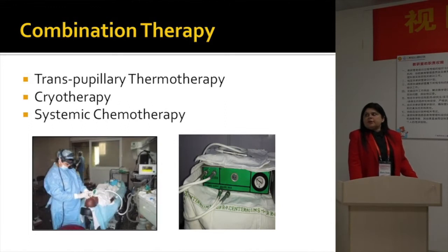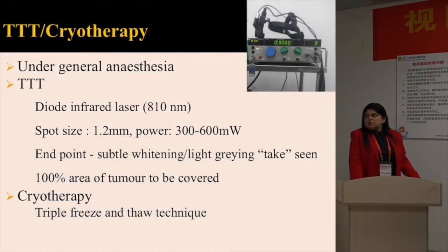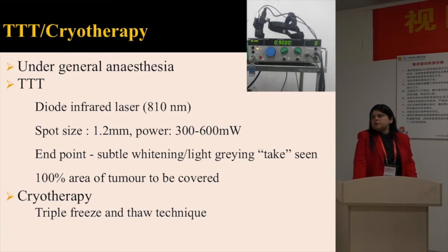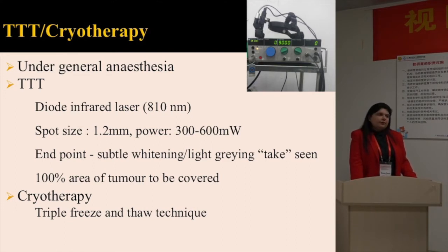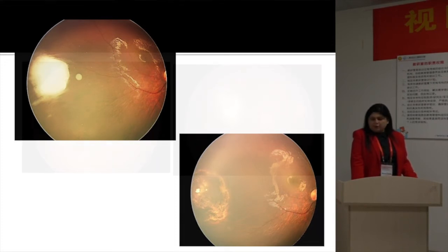When we use combination therapy at our center, we don't use laser — we use transpupillary thermotherapy for tumors anterior to the equator, combined with systemic chemotherapy. Focal consolidation is performed under general anesthesia. For TTT, we use an 810-nanometre diode infrared laser with a large spot size of 1.2 millimetres. Power starts from the lowest and can go up to 600–650 milliwatts, covering the entire tumor until a take is seen. For cryotherapy, we use the triple freeze-thaw technique. This is one tumor that showed a nice response with this combination therapy.